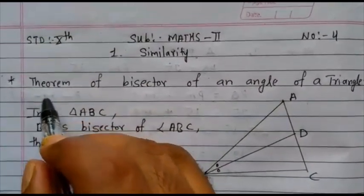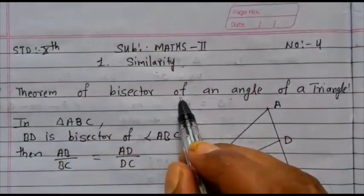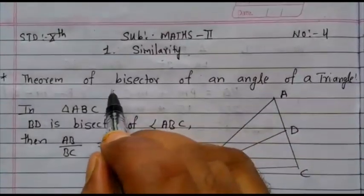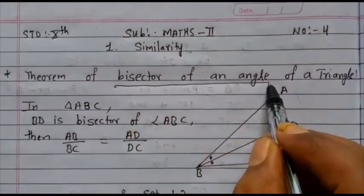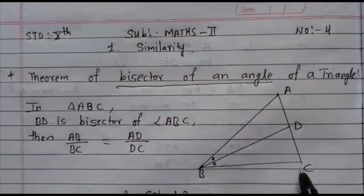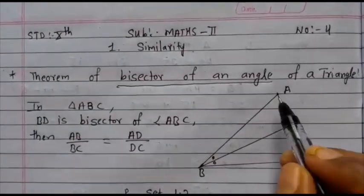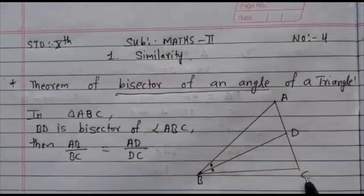Now, this is the next property: theorem of bisector of an angle of a triangle. Bisector of an angle means what? This is the angle, this is bisected by ray BD. So, in triangle ABC, BD is bisecting the angle.